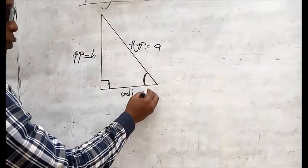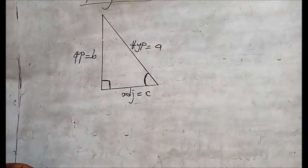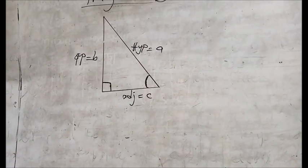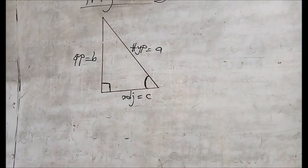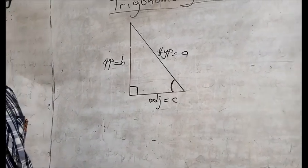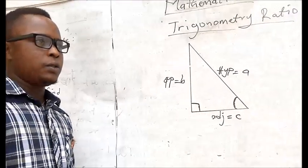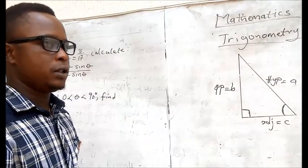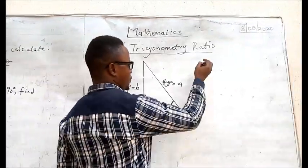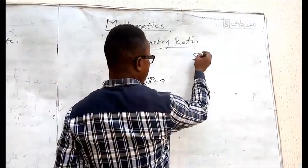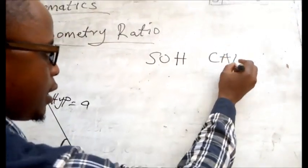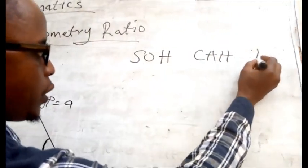So let's call the adjacent C. Now, in trigonometry ratio, it has to do with what we call SOH-CAH-TOA.